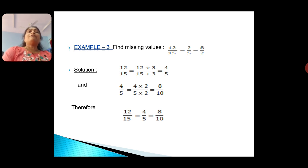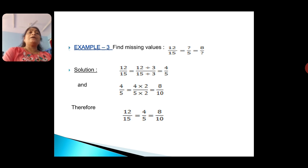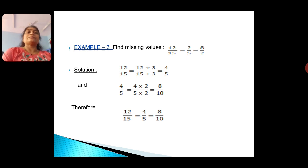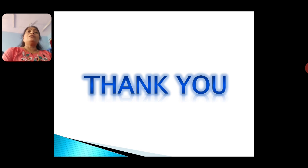Next example: Find the values — 12 by 15 equals missing value by 5 equals 8 by missing value. Here, 12 by 15 divided by 3 equals 4 by 5. And 4 by 5 multiplied by 2 gives 8 by 10. Therefore, 12 by 15 equals 4 by 5 equals 8 by 10. The missing values are 4 and 10. We can solve more examples from the NCERT exercise.